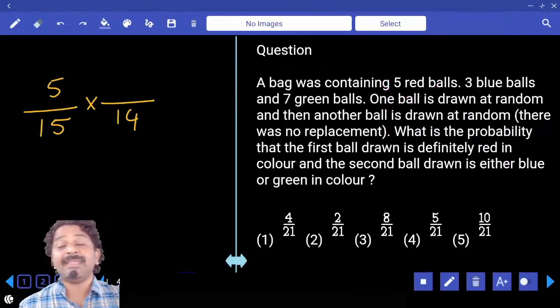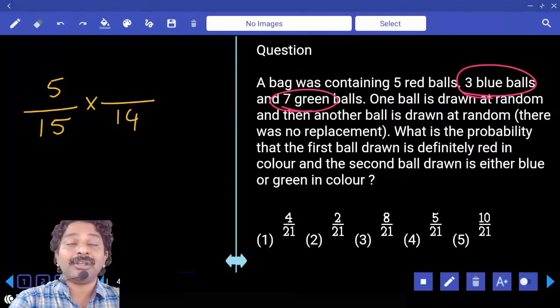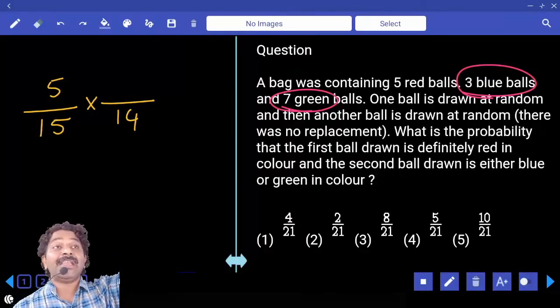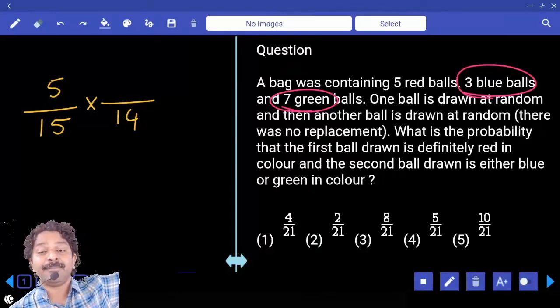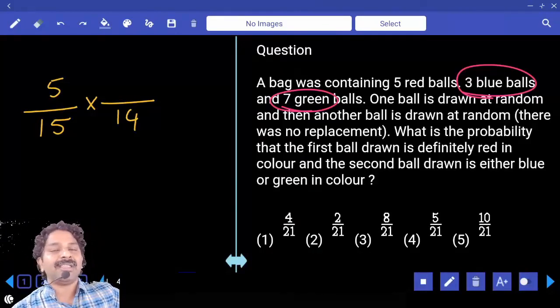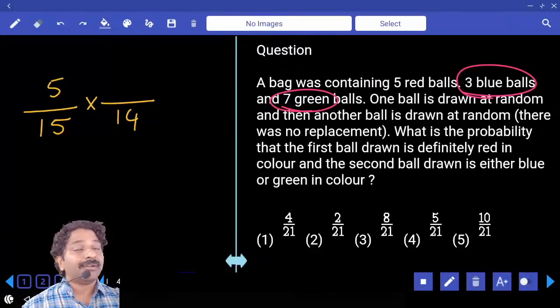Now it may be either blue or red. Out of these 3 blue and 7 green, in the first time did we take any ball which is blue or green? No. That means whatever 3 blue and 7 green are there initially, even now also they are available.